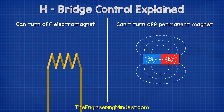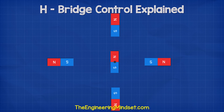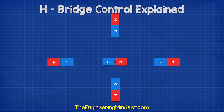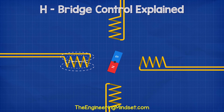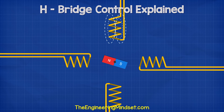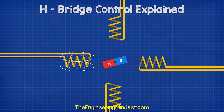If we place a magnet centrally and allow it to rotate freely, we can use other magnets to rotate this. We can also place electromagnets around this and control the rotation by controlling the current flowing through each coil.